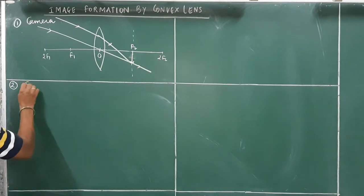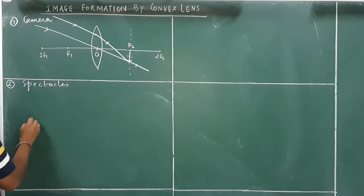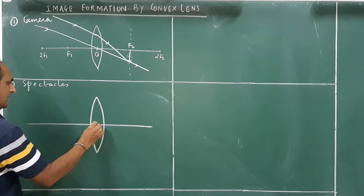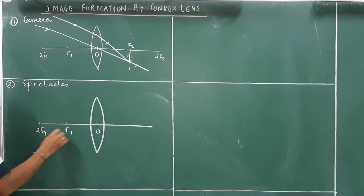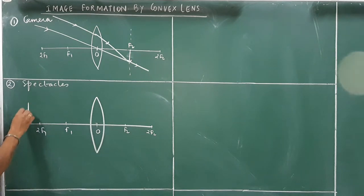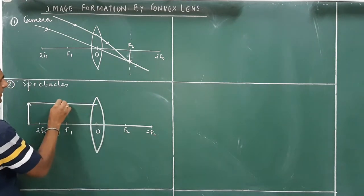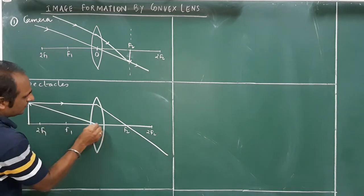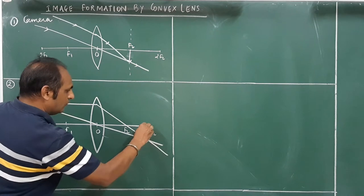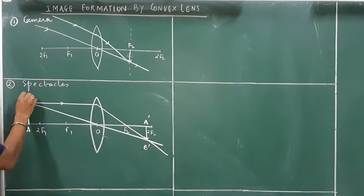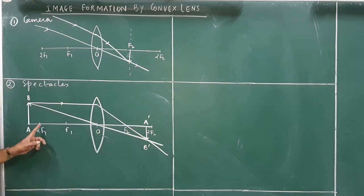Next, we will see how a convex lens is used in spectacles. We have a convex lens with optical centre, f1, 2f1, f2, and 2f2 marked. The object is placed beyond 2f1. A ray coming parallel to the principal axis passes through the focus, and another ray passing through the optical centre goes undeviated. Both rays meet between f2 and 2f2. So the image is formed between f2 and 2f2 when the object is beyond 2f1.